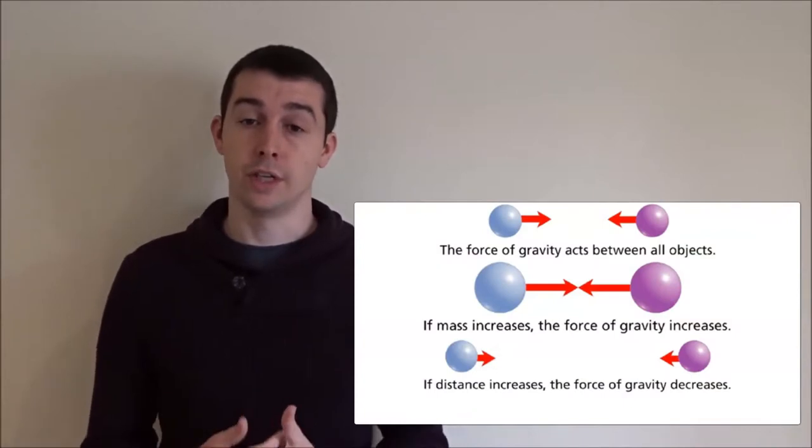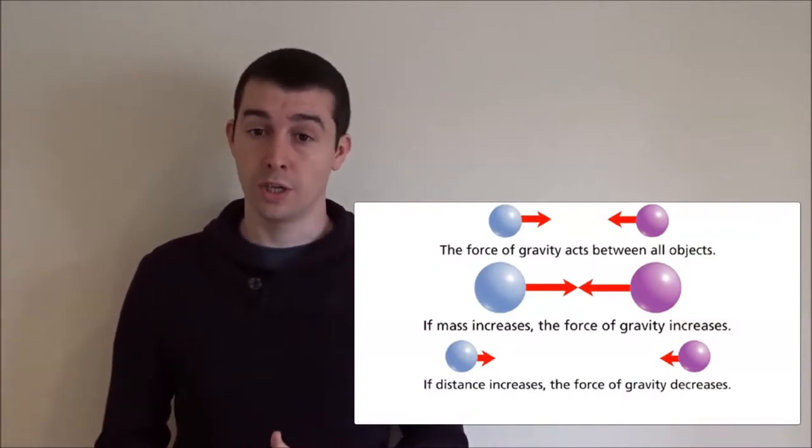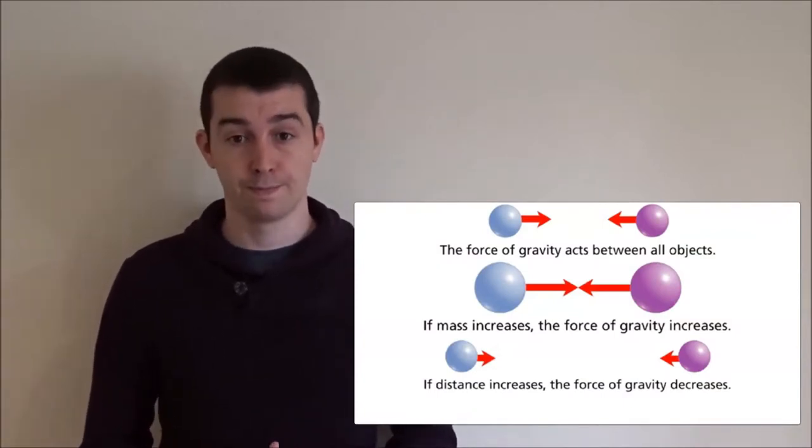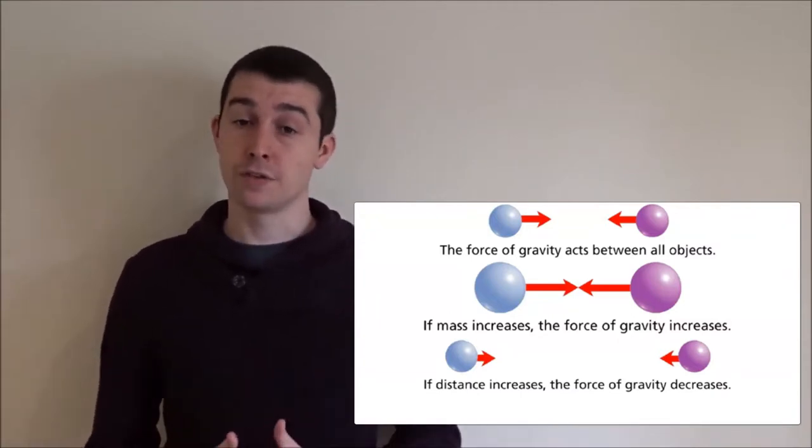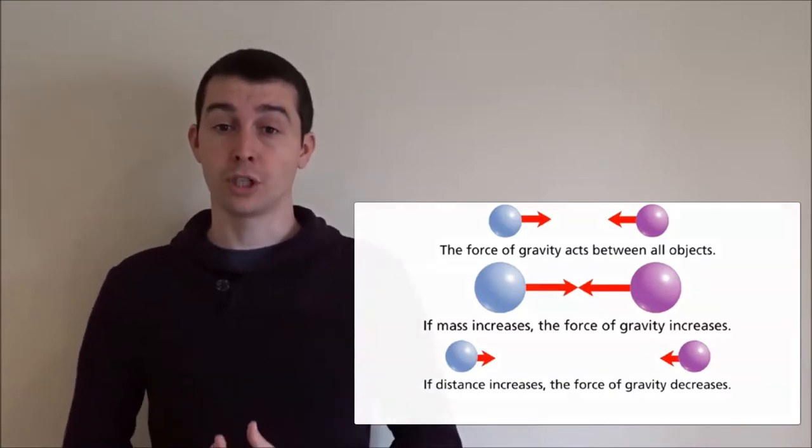Newton's law of universal gravitation shows us that all objects exert a force called gravity. The strength of this force depends on the mass of the object and the effects of this force are weaker the further objects are from each other.